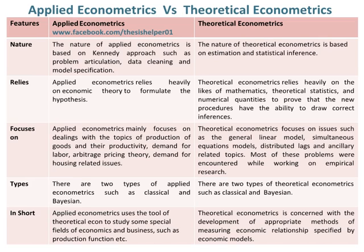Applied Econometrics mainly focuses on topics of production of goods and their productivity, demand for labour, arbitrage pricing theory, and demand for housing-related issues. Whereas, theoretical econometrics focuses on issues such as the general linear model, simultaneous equations models, distributed lags, and ancillary-related topics.